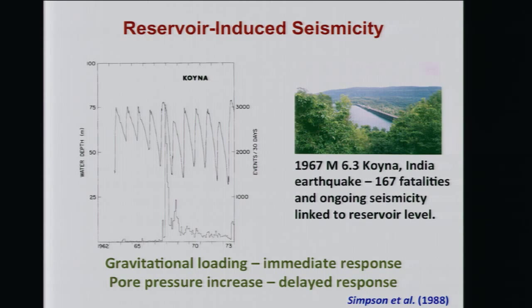A more serious effect is reservoir-induced seismicity. Probably the most famous example is the Koina-India earthquake — a magnitude 6.3 earthquake that occurred in 1967 in east-central India, with 167 fatalities. There is ongoing seismicity even now linked to fluctuating lake levels. Researchers think it's a combination of gravitational loading from the fluctuating water weight in the reservoir and pore pressure increase in a fault beneath the lake. A major experiment is being planned to drill into the source zone of these earthquakes to better understand how these different effects interact to induce the ongoing seismicity.